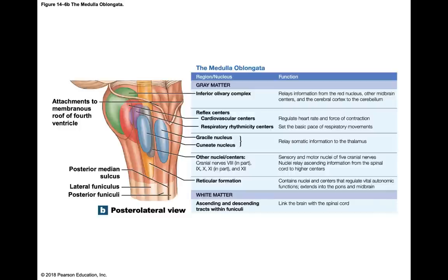The two reflex centers are the cardiovascular centers and the respiratory rhythmicity centers. The cardiovascular center controls heart rate and strength of contractions — even though the heart beats on its own, this center can increase or decrease the heart rate and the strength of contractions, affecting blood flow. The respiratory rhythmicity center sets the respiration rate and helps establish the rhythm of respiration.